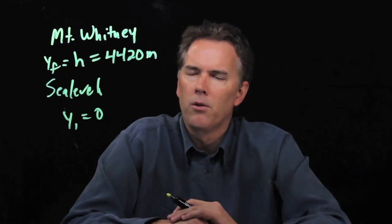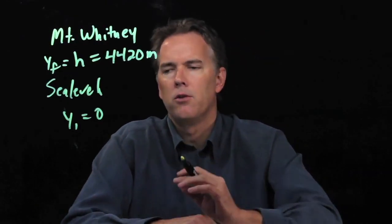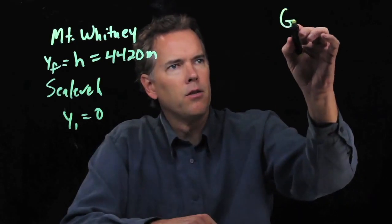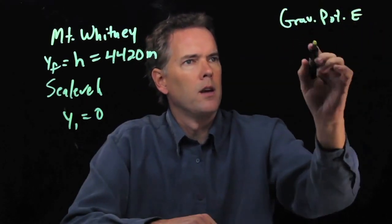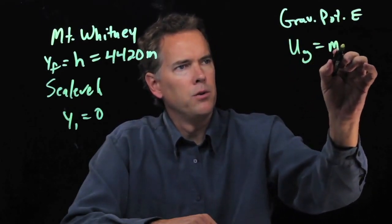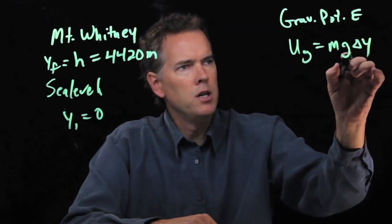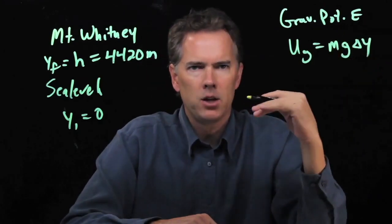Okay, what is gravitational potential energy? Gravitational potential energy is the following. U sub g is equal to mg delta y, your change in height.